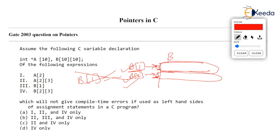Fourth option `b[2][3] = some value` is perfectly allowed — second row, third column storing some value. So the correct answer is options 1, 2, and 4. You can replay the video to check the discussion on the second option. I hope you have understood it. Thank you very much.